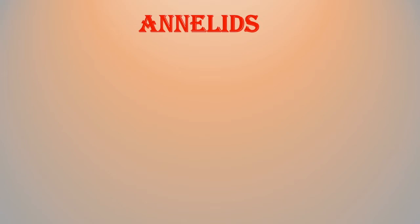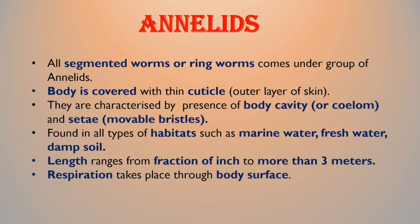Annelids. All segmented worms or ringworms come under the group of annelids. In these animals, the body is covered with a thin cuticle, which is the outer layer of skin. These animals are characterized by the presence of a body cavity called a coelom, and setae, which are movable bristles.